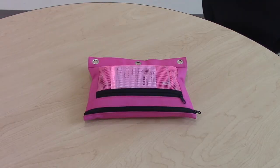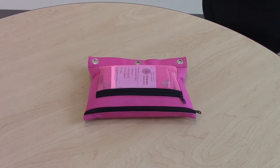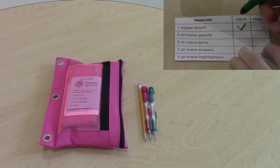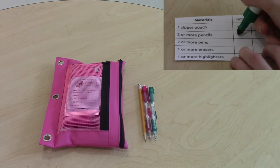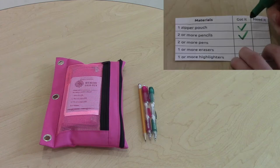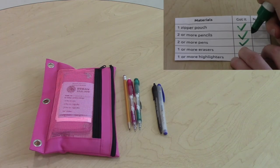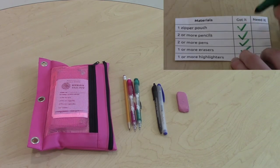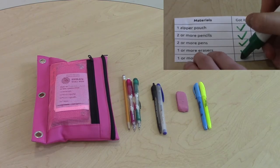Starting off with the pencil pouch. In a clean and organized pencil pouch, you will need two or more pencils, two or more pens, one or more erasers, and one or more highlighters.